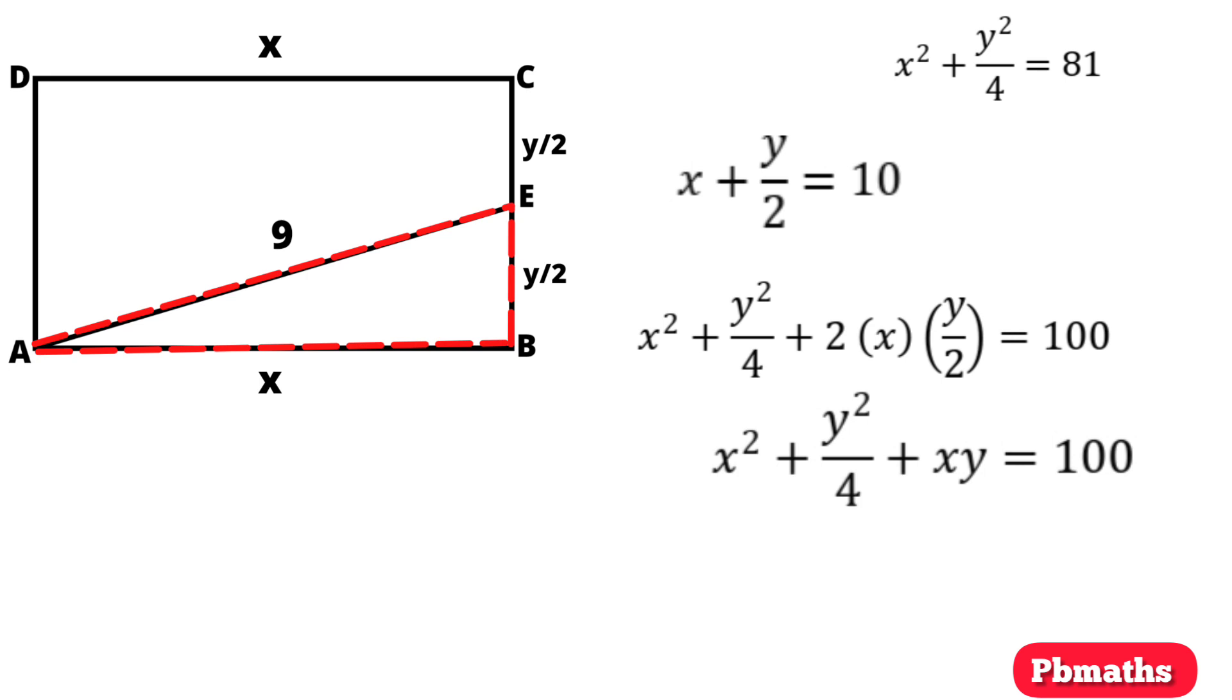Since X square plus Y square by 4 equals 81, we have 81 plus XY equals 100. Therefore, XY equals 100 minus 81 equals 19.